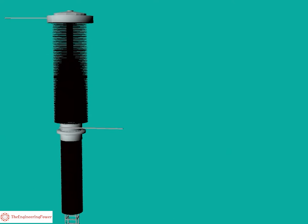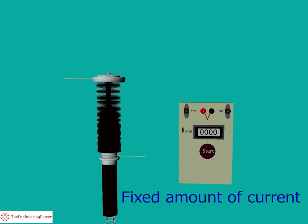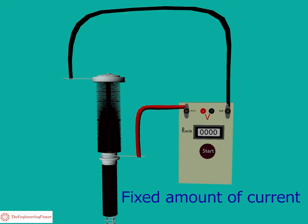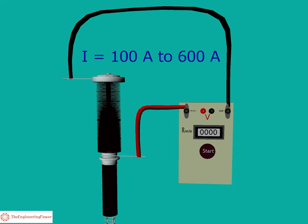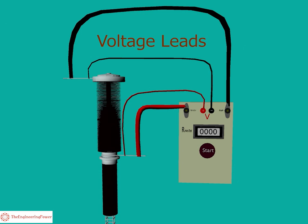In case of circuit breaker, first we make sure that the contacts of the circuit breaker are in closed position. A fixed amount of current is injected through the contacts of the circuit breaker using current leads of the testing instrument. The current value can be from 100A to 600A. The voltage drop across the contacts is measured using voltage leads of the test set.